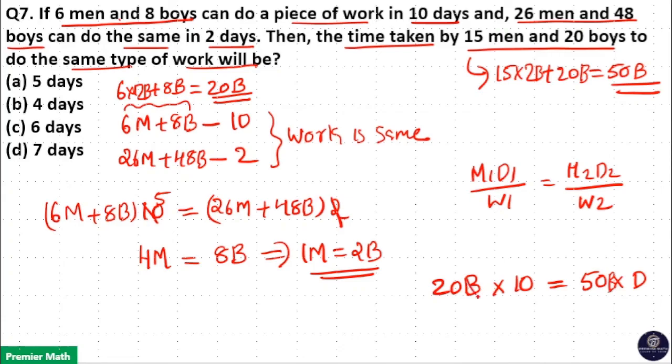So boys cancel. Now 200 by 50 equals 4. So number of days taken by these 50 boys to complete this job is 4 days.